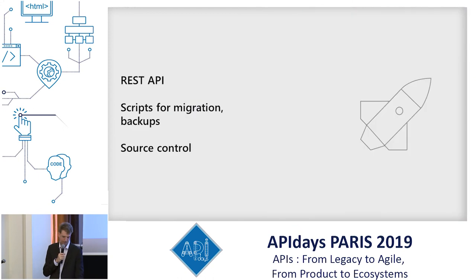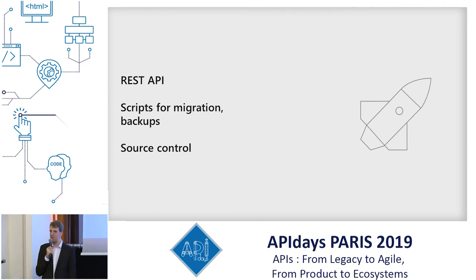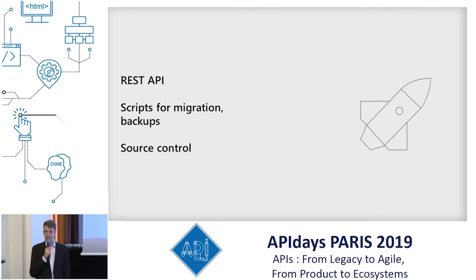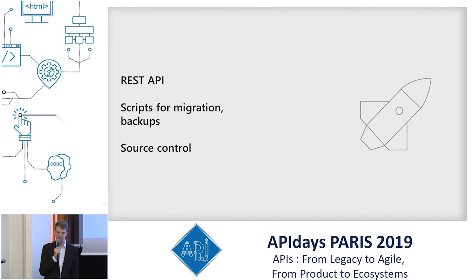We achieved this by making all content — pages, styling, etc. — accessible through a REST API. You can download or upload these JSON documents through the REST API. We also provided scripts in the GitHub repository for migrating between environments and for backups — well documented so you don't need to write your own tools. In the future, we're thinking of enabling people to store this content as part of a source control Git repository where you can see all comments and changes.